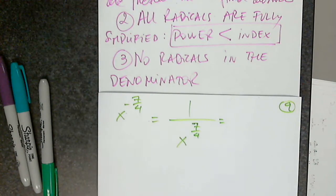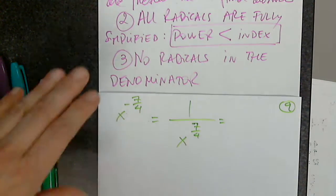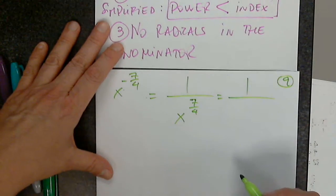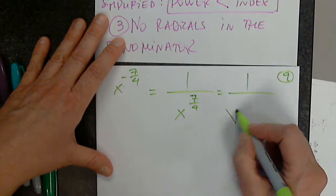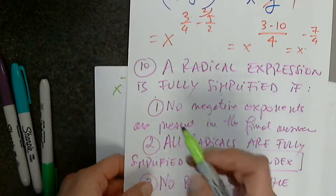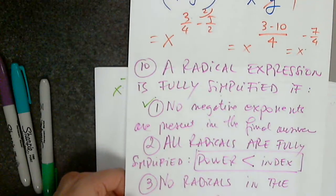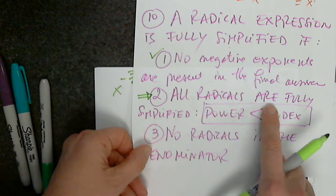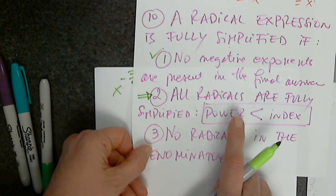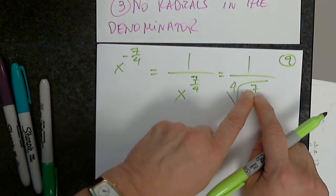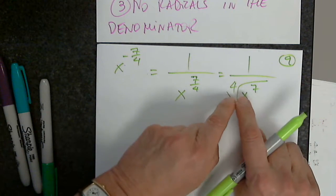But now what is x to 7 fourths? It represents the fourth root of x to the 7th. So now for this particular problem, condition one is fulfilled — but condition two is not. All radicals are fully simplified if the power of the radicand is less than the index; 7 is higher than 4.